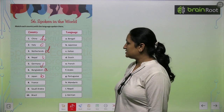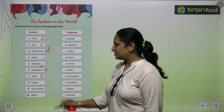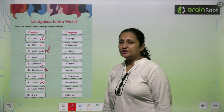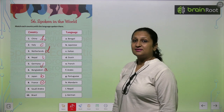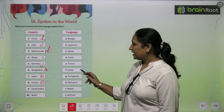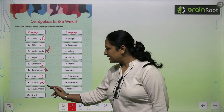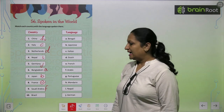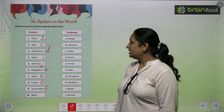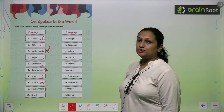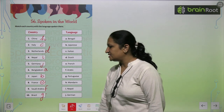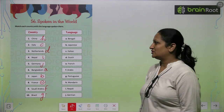And France — what language is spoken in France? French is spoken in France, so you will write E here. See the ninth one, children — Saudi Arabia. What language is spoken in Saudi Arabia? That is Arabic, so you will write F here. And last, Brazil — what language is used in Brazil? That is Portuguese, so you will write G here. Like this, you are going to complete this page, children.